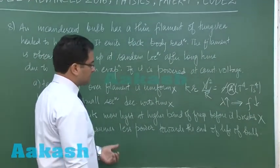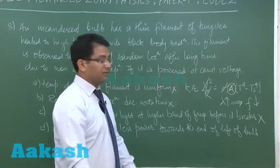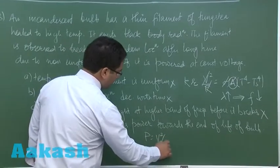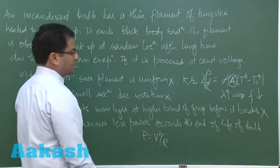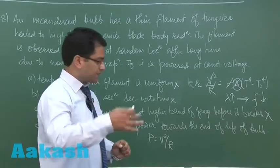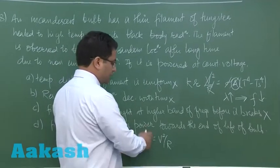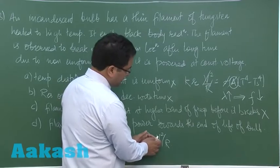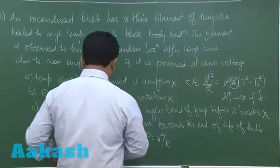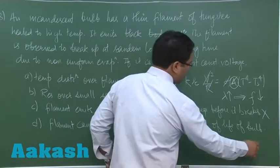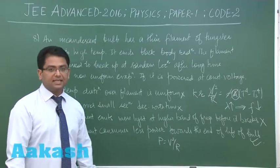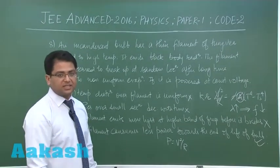Filament consumes less power towards the end of the life of the bulb. This seems to be correct because the power is V² by R. Now you could see that the value of resistance is increasing because the cross-sectional area has decreased. So overall, the power would decrease because the supply high voltage is constant. So here you could see filament consumes less power; this would be the correct option. So here the correct option is D.